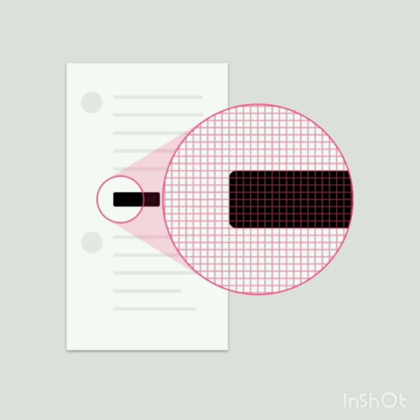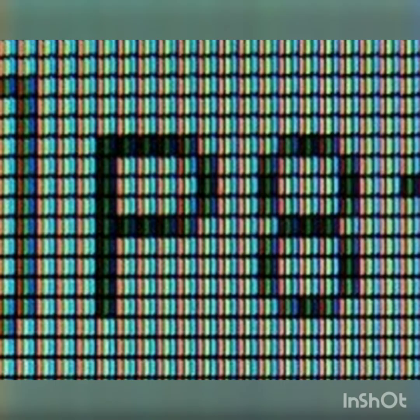Pixel is the smallest element of an image. Pixel is used to create pictures, tools, text.